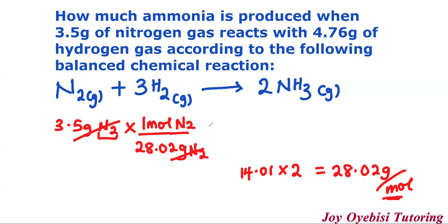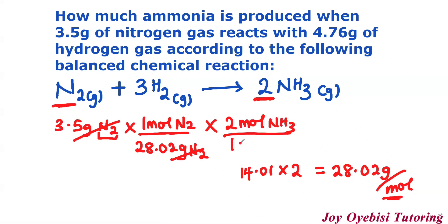The second step is to use the stoichiometric relationship. Here you have one mole of nitrogen against two moles of ammonia. The two moles of ammonia go on top, and you have one mole of nitrogen below — so that these two cancel out. Now you have moles of ammonia.